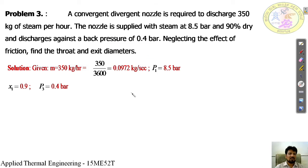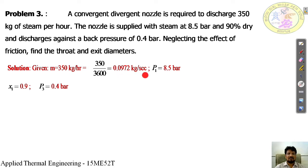Note down the given common values. The mass of steam discharged through the nozzle per hour is 350 kg per hour. Converting to kg per second: 350 divided by 3600, which is equal to 0.0972 kg per second. The initial pressure P1 is 8.5 bar, the dryness fraction is 90%, which is 0.9, and the back pressure is 0.4 bar. These are the values given.